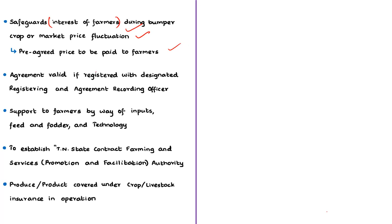Normally farmers are affected by bumper crops and price fluctuations, getting paid very little for their produce. This act tries to mitigate this loss. According to the act, a pre-determined or pre-agreed price will be paid to the farmers. This pre-agreed price is fixed during the time of signing the contract farming agreement between the farmer and the buyer.